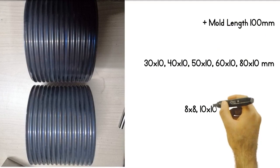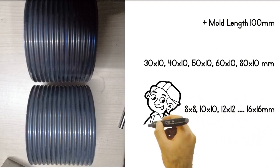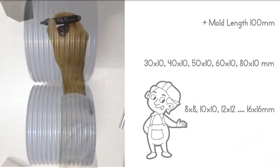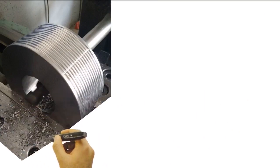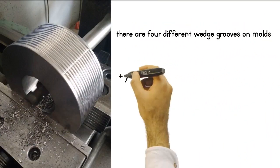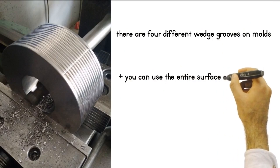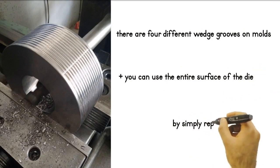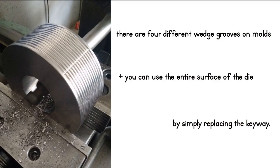You can crush and sharpen the ends of a maximum of 80-10 and 16 or 16 square bars. In order to extend the life of the molds, there are four different wedge grooves on the mold. So if there is an aging surface, you can use the entire surface of the die for end milling and sharpening by simply replacing the keyway.